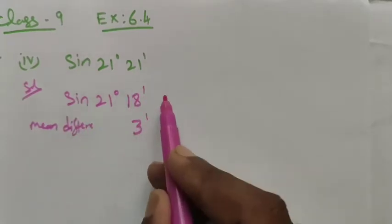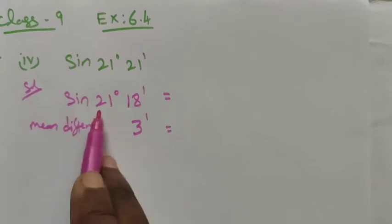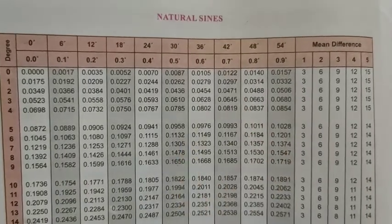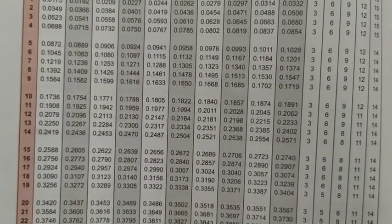You know, you have to find the mean difference 3 minutes contribution. So sin 21 degree 18 minutes value in the table. We are finding the sine, so natural sine 21 degree 18 minutes. 21 degree is here.